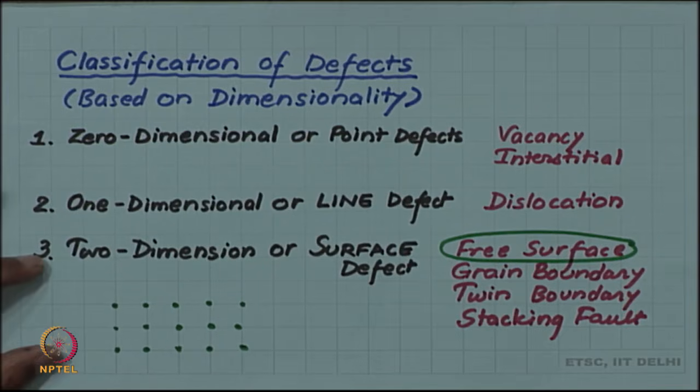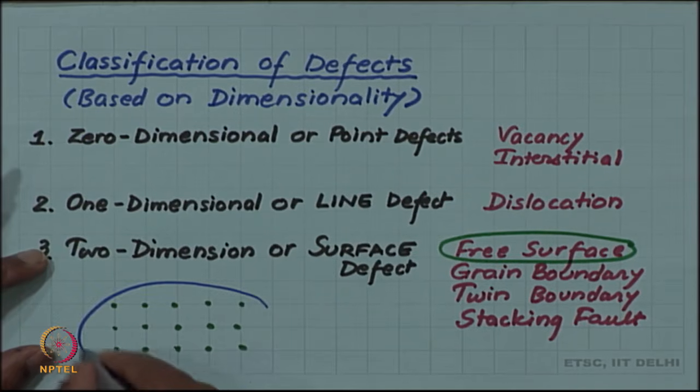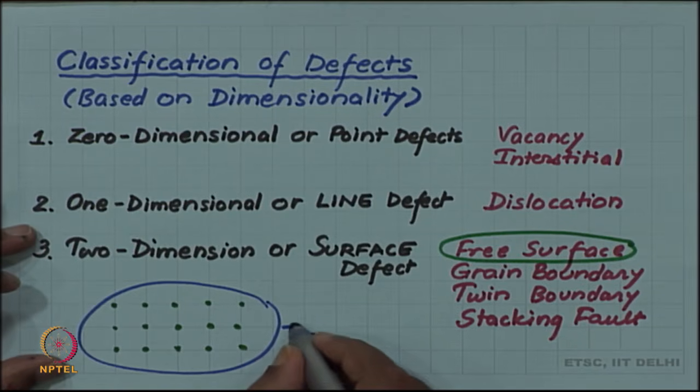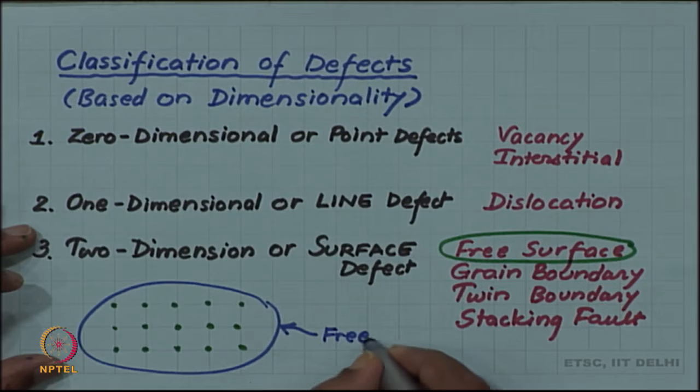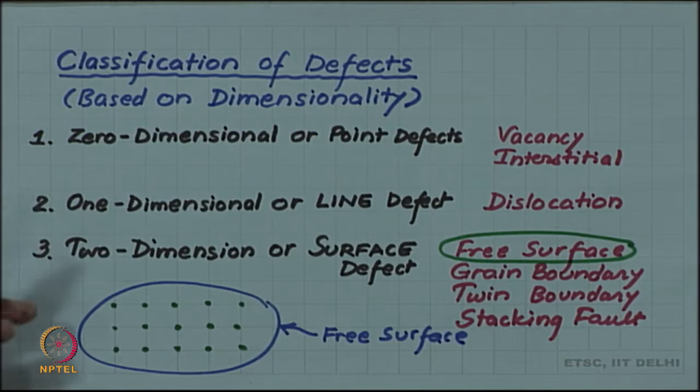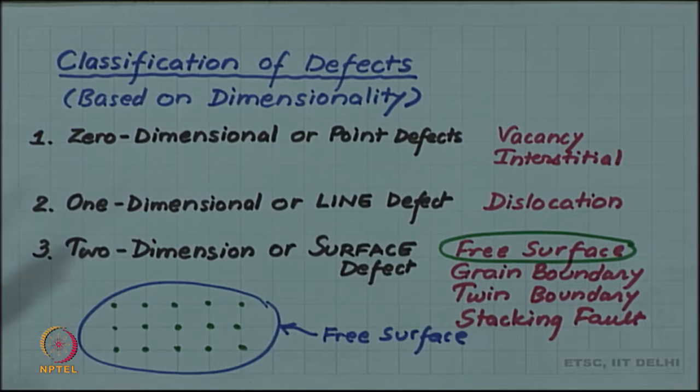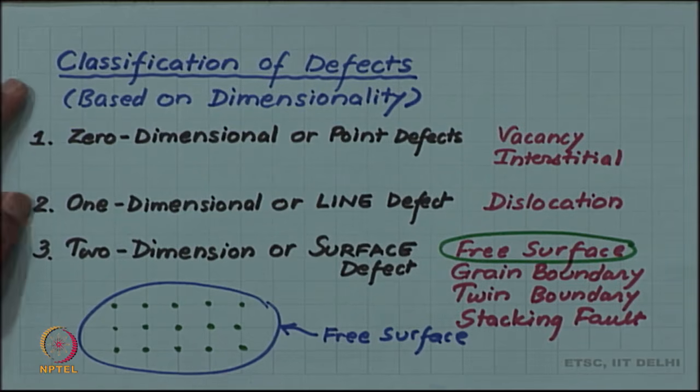The very fact that the crystal is bounded by a surface, because our real crystals will always be a finite crystal, it will have a boundary line, and that boundary or the external surface, that is why we are calling it a defect. It may appear that why should a free surface be a defect, but since by definition of periodicity of ideal crystal, the requirement is of an infinite lattice.